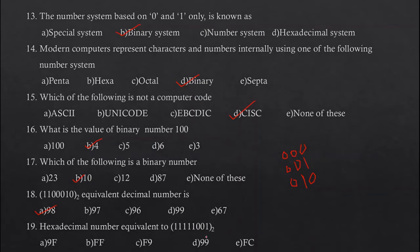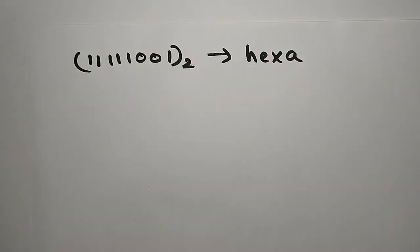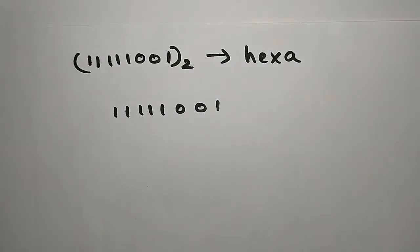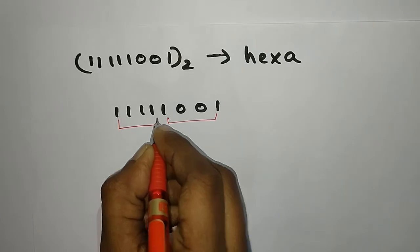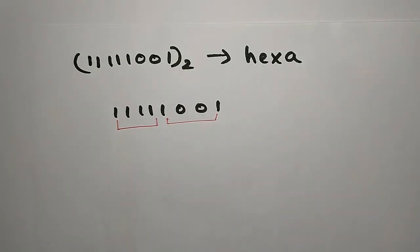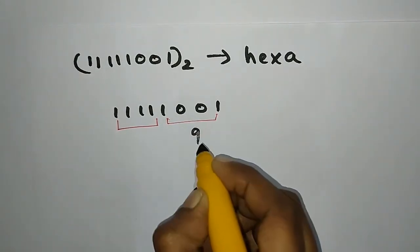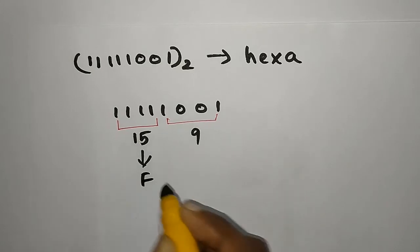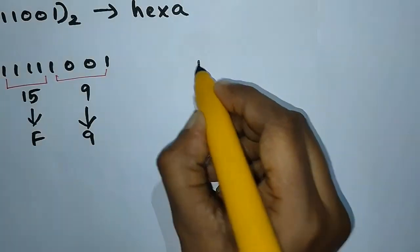The next question: which hexadecimal number equals the binary number 11111001? To convert binary to hexadecimal, group the binary digits into 4-bit groups from right to left. The binary 11111001 becomes two groups: 1111 and 1001. 1111 corresponds to decimal 15, which is hexadecimal F. 1001 corresponds to decimal 9. So the answer is F9.